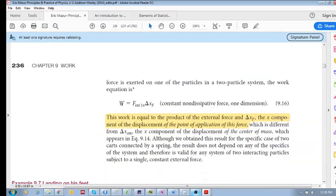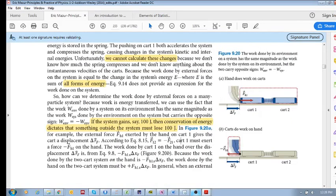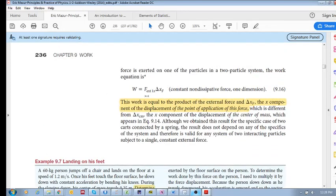So eventually, we realize that the work done on a many-particle or two-particle system, even a many-particle system, is simply equal to this external force multiplied by the delta X, by the force displacement at that point. This is what this is saying. So the work of a many-particle system is the product of the external force and delta X_F, which is the component of the displacement of the point of application of this force. It is different from F times delta X center of mass, which is the displacement of the center of mass.